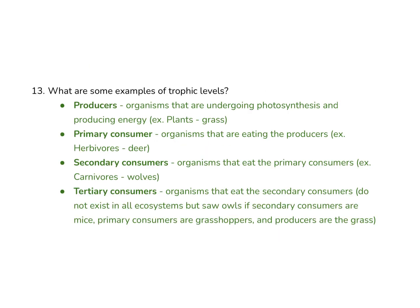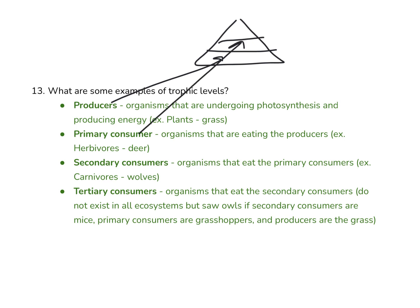Question number 13: what are some examples of trophic levels? We draw it as a triangle. At the bottom are producers — organisms undergoing photosynthesis. Above that are primary consumers, the ones that eat the producers, typically called herbivores. Then secondary consumers above that — typically carnivores or omnivores, since they can sometimes eat both plants and animals. Then tertiary consumers at the top. Not all ecosystems have tertiary consumers; some even have quaternary consumers or more. The number of levels depends on the ecosystem.